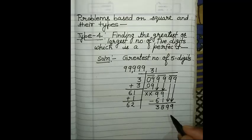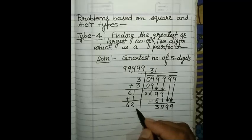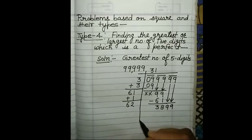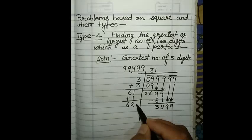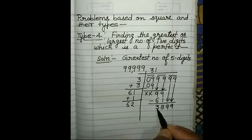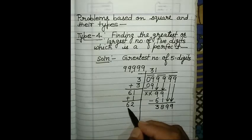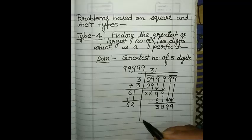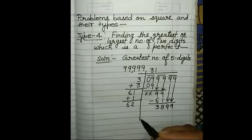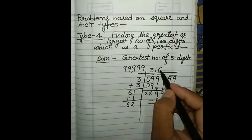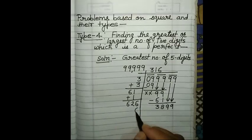3,899 — and this is going to be 620. Now we check around 3,800. If we go 6 times: 6 times 6 is 36, which is less than 38. Then checking 7: 7 times 6 is 42, which is greater than 38. That's why we take 6 as the quotient. We write 6 here and also add 6.